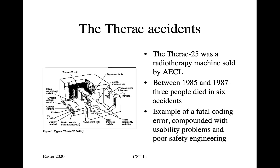The Therac-25, the therapeutic accelerator, was a radiotherapy machine sold by Atomic Energy of Canada Limited, and between 1985 and 1987, three people died in six accidents. This is an example of fatal coding errors compounded with usability problems and poor safety engineering. There's a diagram of the device on the left. Basically, there's an accelerator which accelerates electrons to high speed, and this can then hit either a metal target to generate x-rays, or else it can be collimated into a beam of electrons used for free electron therapy. The patient is put on a stretcher underneath the machine, and the operator sits outside, away from the radiation, able to monitor what's going on by means of a TV camera and an intercom.